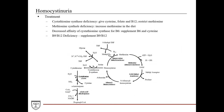Treatment depends on the underlying cause. If a patient has cystathionine synthase deficiency, you can give cysteine, folate, and vitamin B12, and restrict methionine — since methionine will eventually be converted into homocysteine. If they have methionine synthase deficiency, you can increase methionine in the diet. If it's due to cystathionine synthase having decreased affinity for B6, supplement with vitamin B6 and cysteine. For vitamin B9 or B12 deficiency, supplement with the respective deficient vitamin.